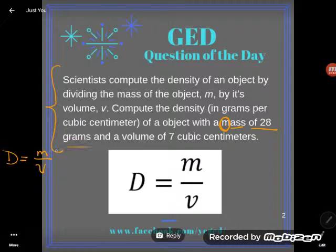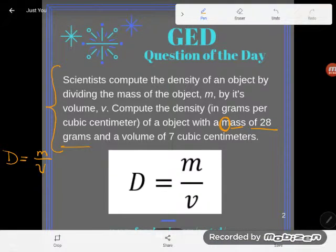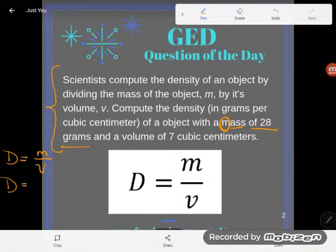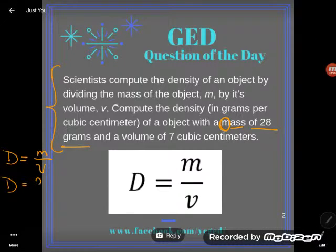First one I see is that my object has a mass of 28 grams. Well guess what? A mass of 28 grams, that's going to be my m. So I'm going to come down here and I'm going to rewrite my formula, but I'm going to substitute out that 28 for m.